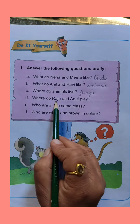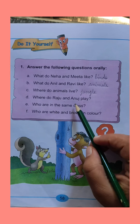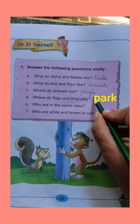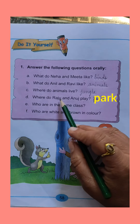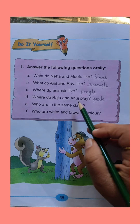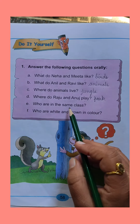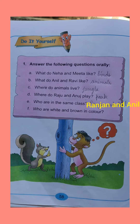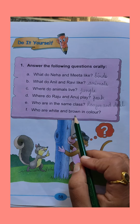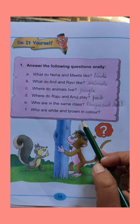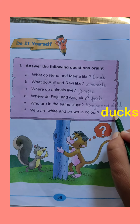D part: Where do Raju and Anuj play? Raju and Anuj play in the park. Instead of Raju and Anuj — Raju aur Anuj ki jaga hum kia use kar sakte hain? Yes, 'They play in the park.' E part: Who are in the same class? Ranjan and Anil. F part: Who are white and brown in color? Ducks — D-U-C-K-S.